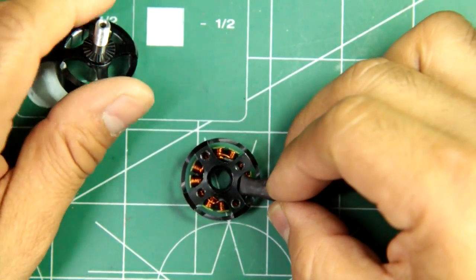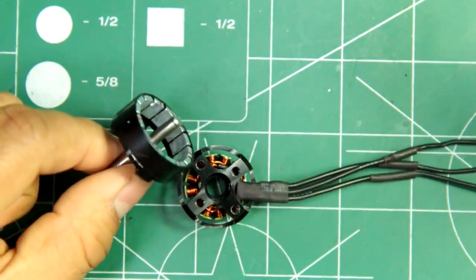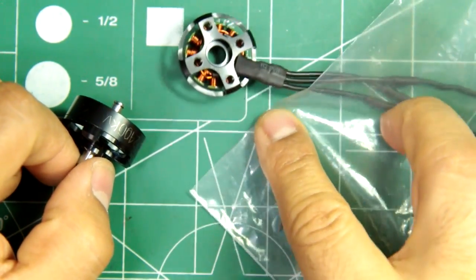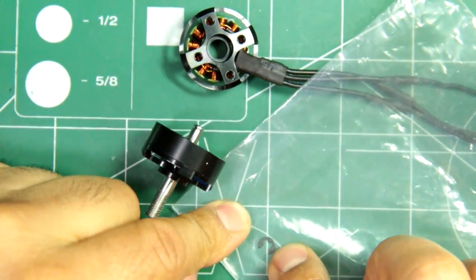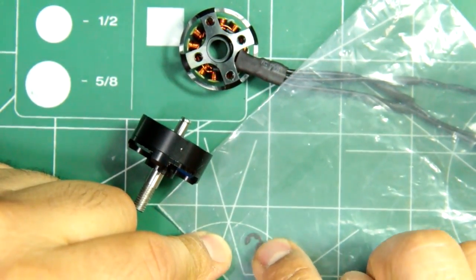Anyway, I took the motor apart. It uses the regular clip, the C-clip on the shaft, so these are pretty easy to remove.